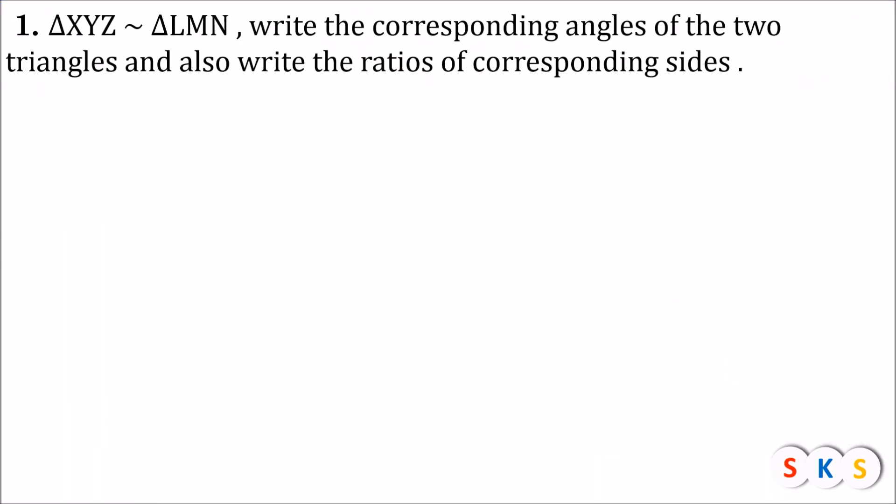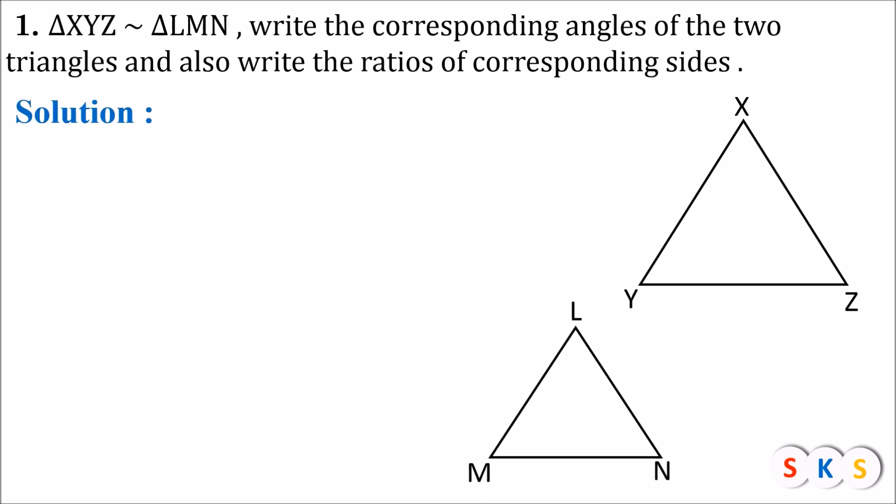Here we have Question 1: Triangle XYZ is similar to triangle LMN. Write the corresponding angles of the two triangles and also write the ratios of corresponding sides. What is given: two triangles are similar. What we have to find: corresponding angles and ratio of corresponding sides. Let's see the solution.